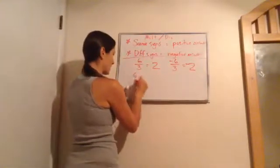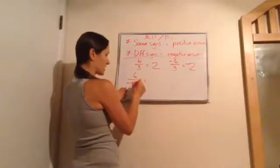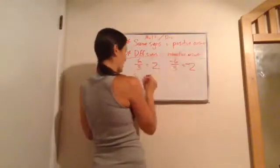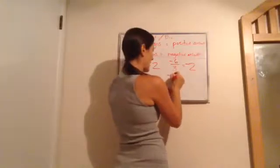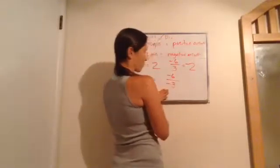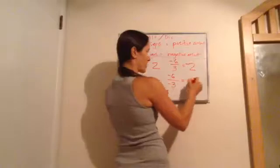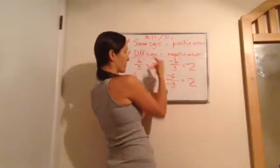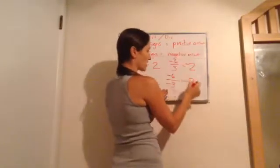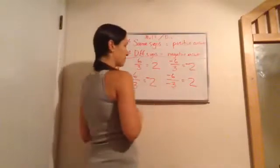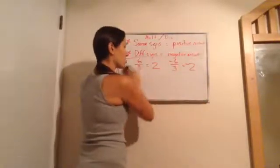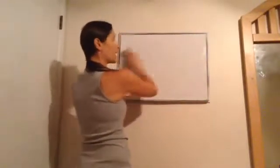What if we have 6 divided by negative 3? Again, 6 divided by 3 gives us 2, but since one is negative and one is positive, we have different signs, so we're going to get a negative answer. And then lastly, negative 6 divided by negative 3. 6 divided by 3 is 2. I always answer the number part, and then ask myself: do I have same signs or different signs? This one's same, so same equals positive — my answer is going to be positive 2. That's a brief overview of multiplication and division of signed numbers.